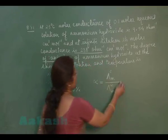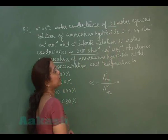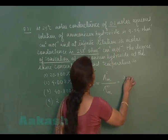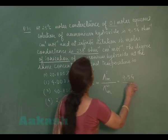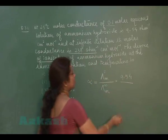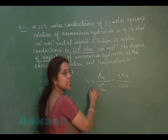In this question, molar conductivity at particular concentration, that is 0.1 molar concentration, it is given 9.54. Molar conductivity at infinite dilution is given 238. So this is alpha.